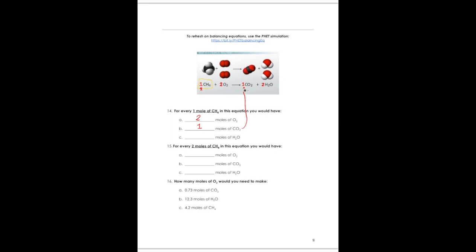For number 15 part A, instead of one mole, what if we doubled the moles? Two methanes, four oxygens, two CO₂, and four waters. If you double one amount, you must double all the other coefficients. So for every two moles of CH₄, you now have four moles of oxygen and two moles of carbon dioxide. You could triple this or multiply by one and a half — whatever you do to one coefficient, you must do to all others because they share the same proportion.